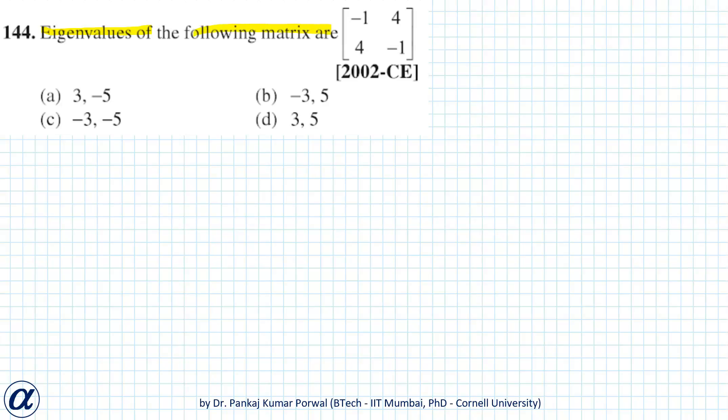We will solve this using properties of eigenvalues. The properties are: sum of all eigenvalues equals trace of A, and product of all eigenvalues equals determinant of A.